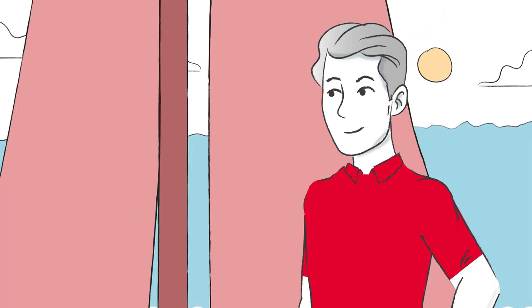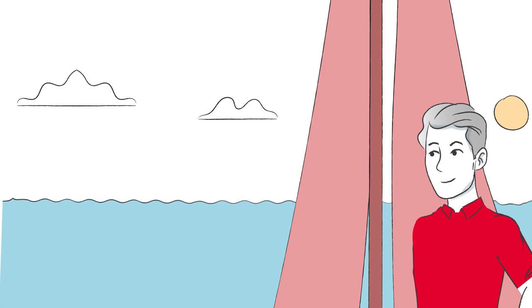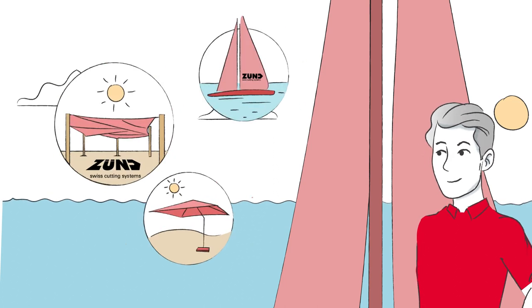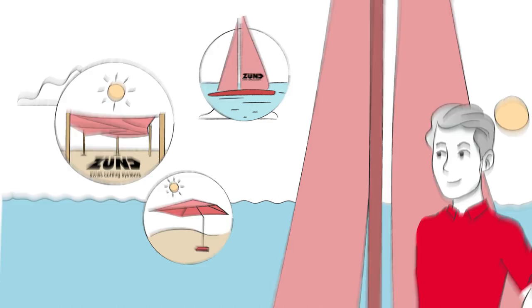Theo is a passionate sailor. He uses his Zund cutter to work not only on sails, but also on sun protection systems and other unprinted technical textiles.